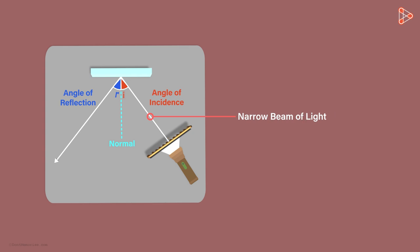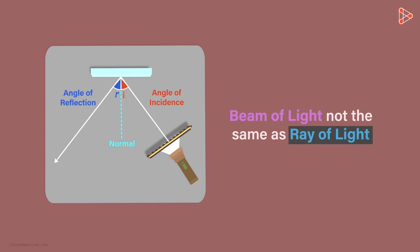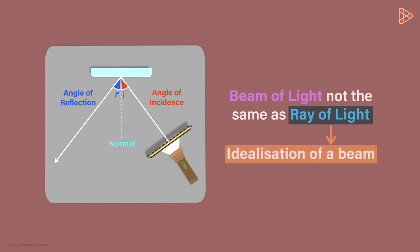Also one more thing that we need to keep in mind is that the beam of light is different from the ray of light. For example in this experiment, the light you see is a beam of light. A ray of light is simply an idealization of a beam. We can see a beam but we cannot see a ray of light. However, at this stage, we can think of ray of light as a narrow beam of light. And we will call this narrow beam a ray of light.